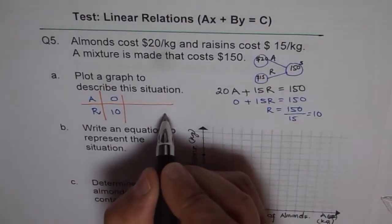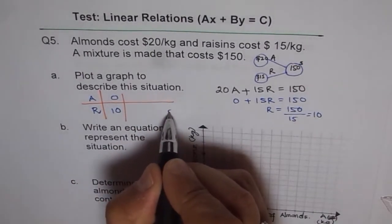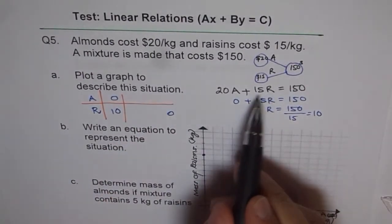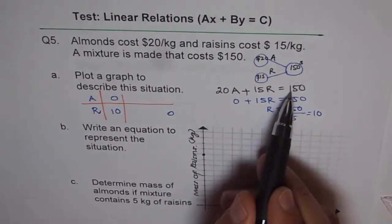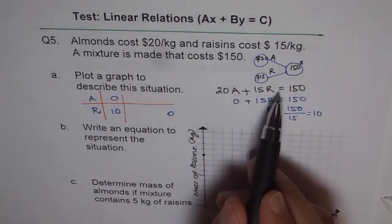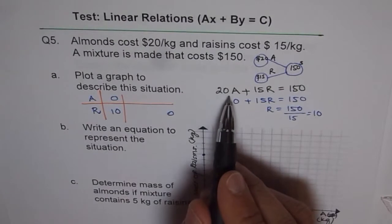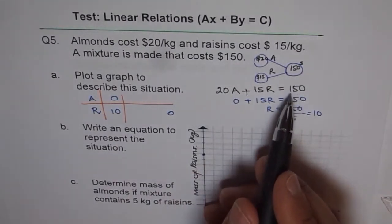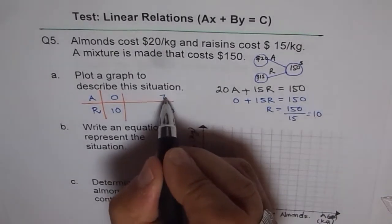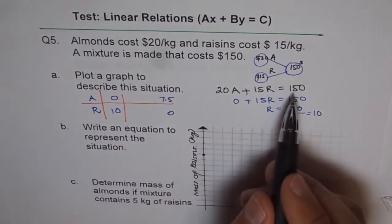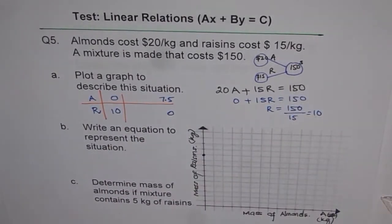So now I will get another point. Let R be 0. If R is 0, then we get 20A equals 150. Or A is 150 divided by 20. Use your calculator and then find it out. So you will get this as 7.5. 15 divided by 2, half of 15, 7.5.